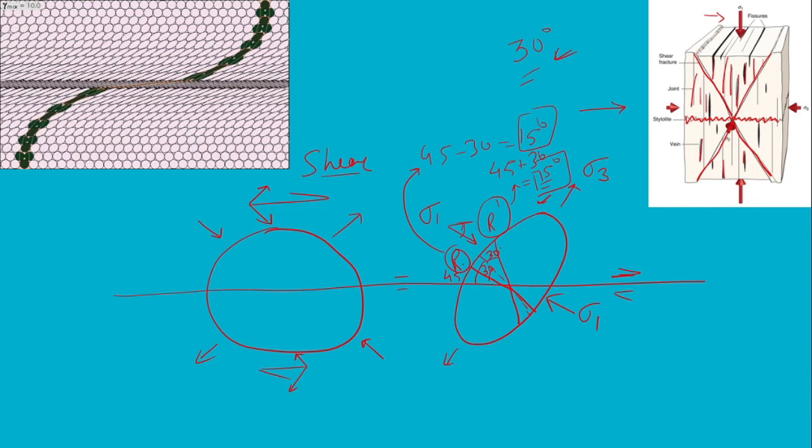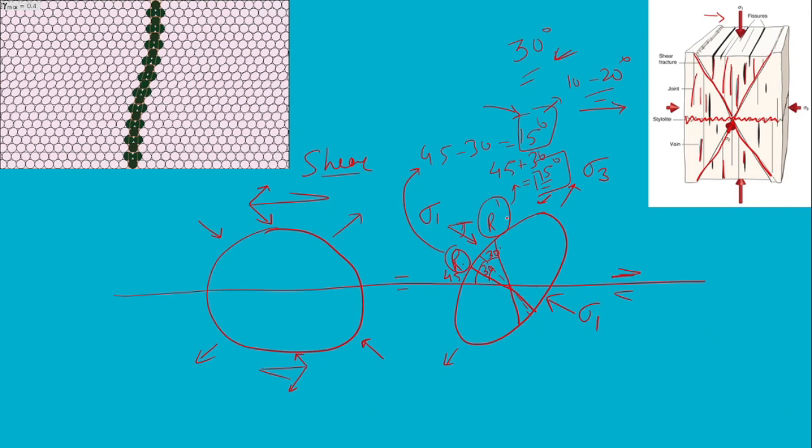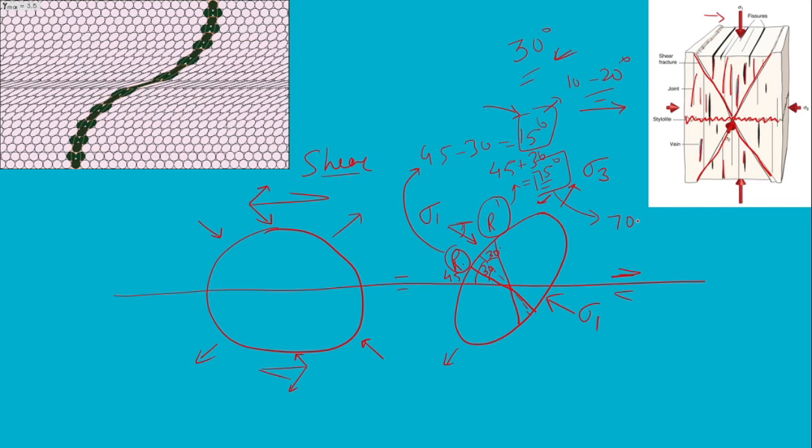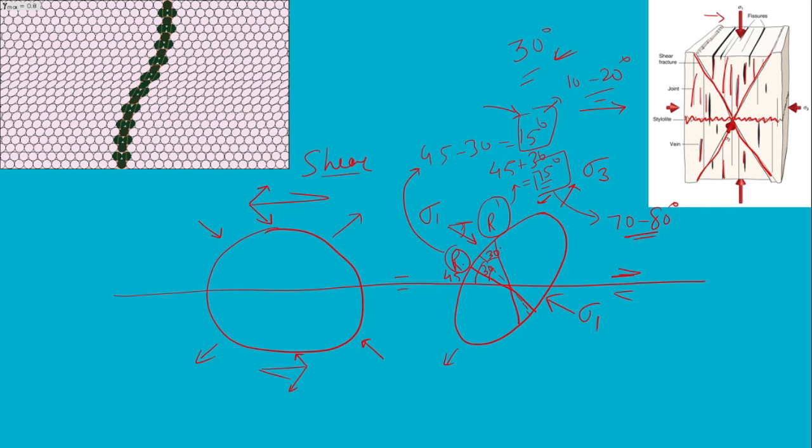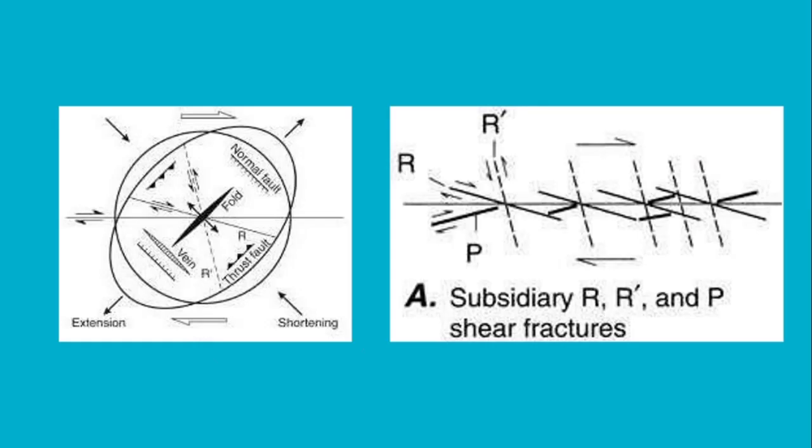Now those who have an idea about Riedel shears should know that this Riedel shear is actually a low-angle fault to the main fault, which generally is 10 to 20 degrees, which can vary. And this Riedel prime or conjugate Riedel shear is a high-angle fault to the main fault at about 70 to 80 degrees. So now I hope you understand how did this 75 or 70 to 80 range come, and how does this Riedel shear is a low-angle fault.